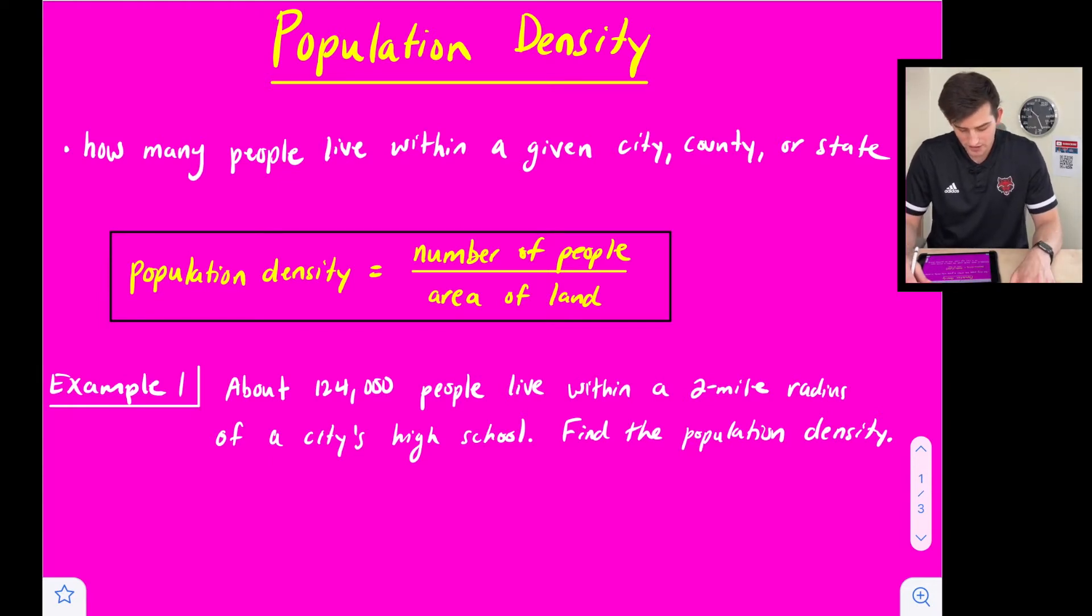So what is our equation? Population density is equal to the number of people that live in the area divided by the area of the land.